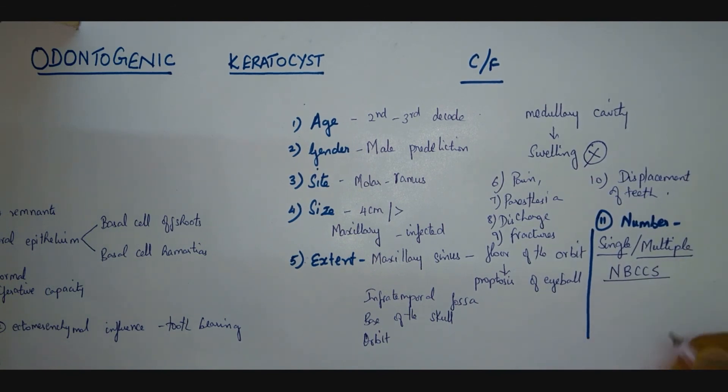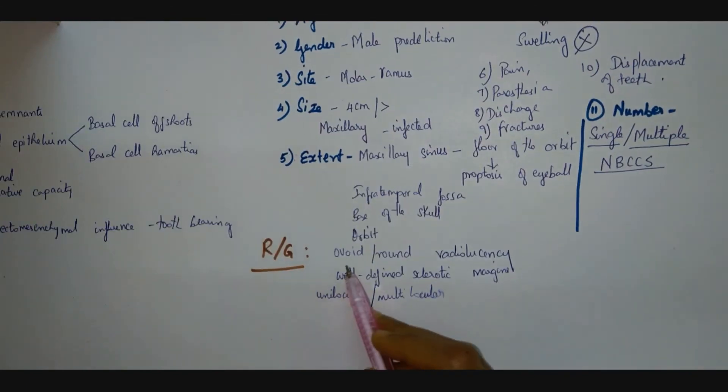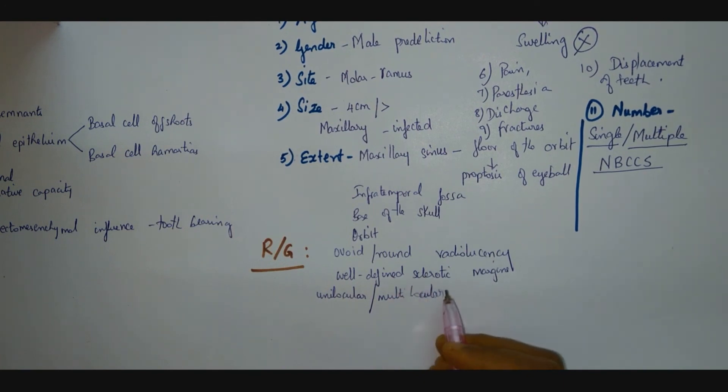Radiographically, the lesions appear as ovoid or round radiolucency with well-defined sclerotic margins. Unilocular as well as multilocular radiolucency can be present. Usually there is no bony expansion present.